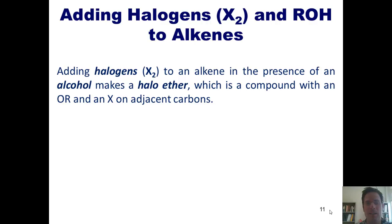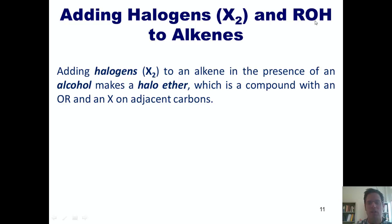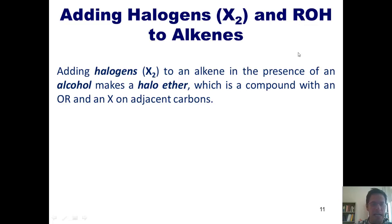As you might surmise, if I take a halogen and add it to an alkene in the presence of an alcohol, which is shown here simply as ROH, where R represents any hydrocarbon chain, it's going to do something very, very similar. The name of the type of product made under these conditions is a haloether, which is a compound that has an OR on one carbon and an X on an adjacent carbon.